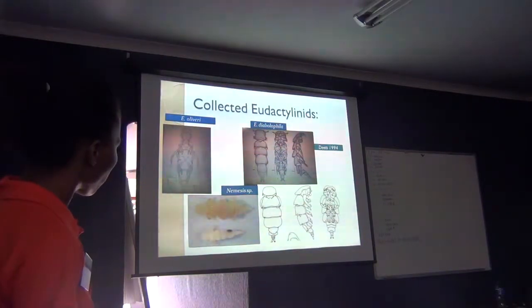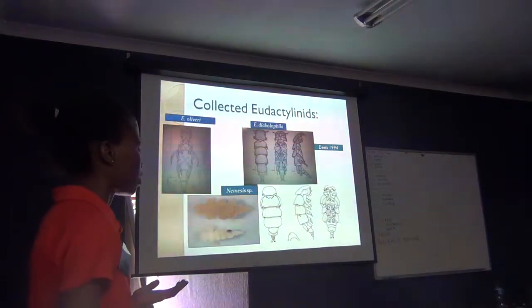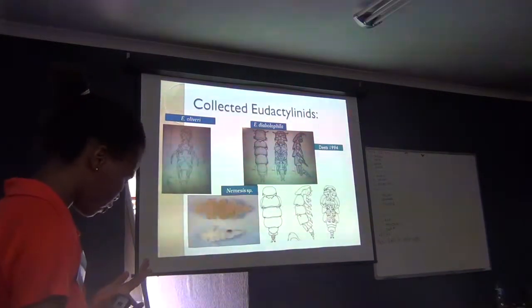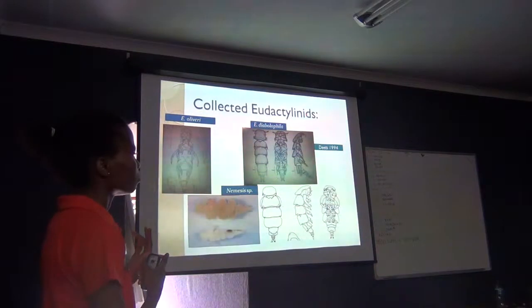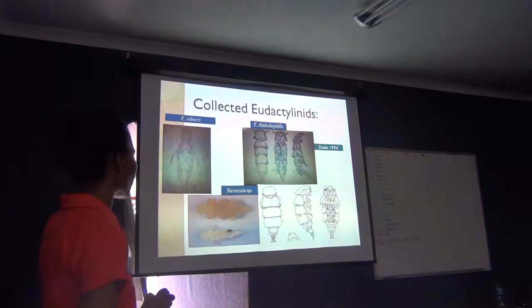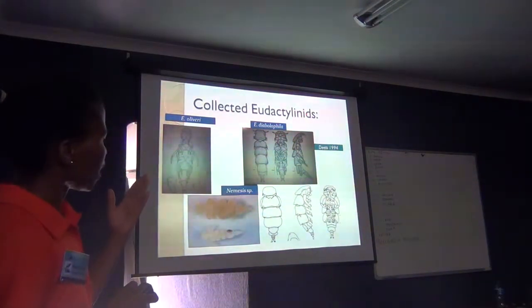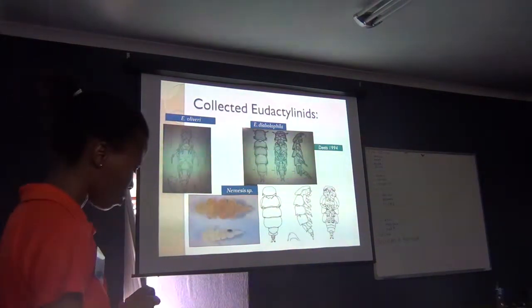One of the three species in the next family has been reported from South Africa before, while Uraxina diablophila and Nemesis are being reported from South Africa for the first time. Nemesis has only been reported from dasyatid rays — the stingrays — so this is the first time it has ever been recorded on a mobula ray.